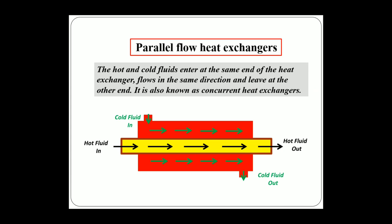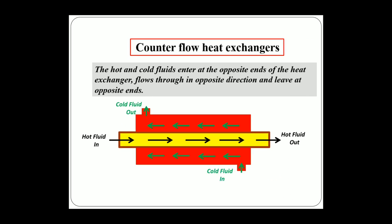The next classification is based on flow arrangement. The first type is parallel flow heat exchangers, where hot and cold fluids enter at the same end and travel in the same direction. This is also known as concurrent heat exchangers. Here, in a double pipe heat exchanger, both the hot fluid and cold fluid move from left to right in the same direction.